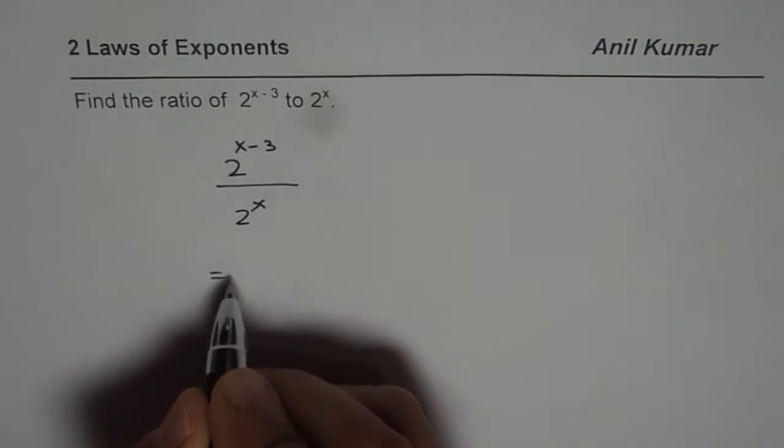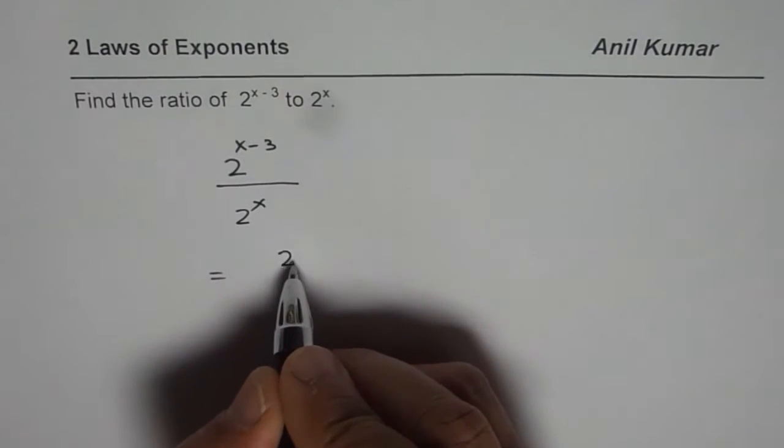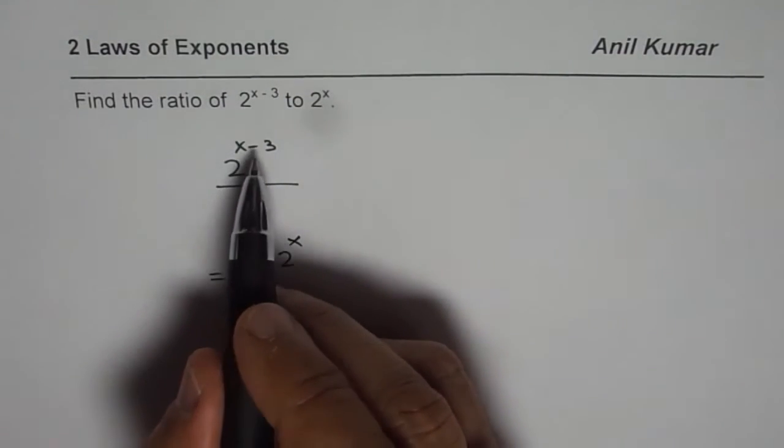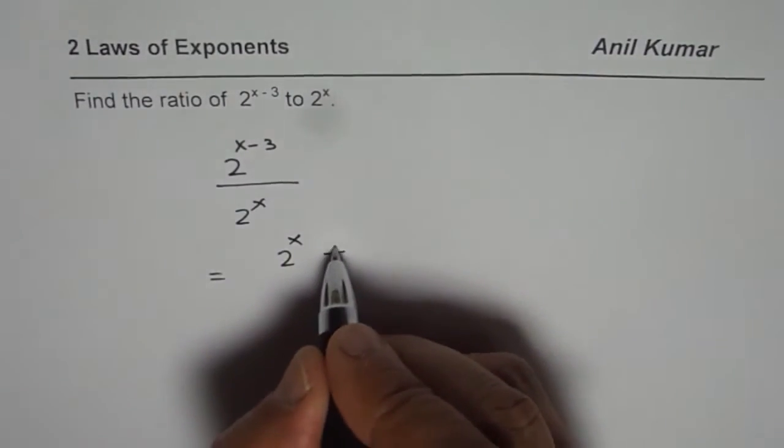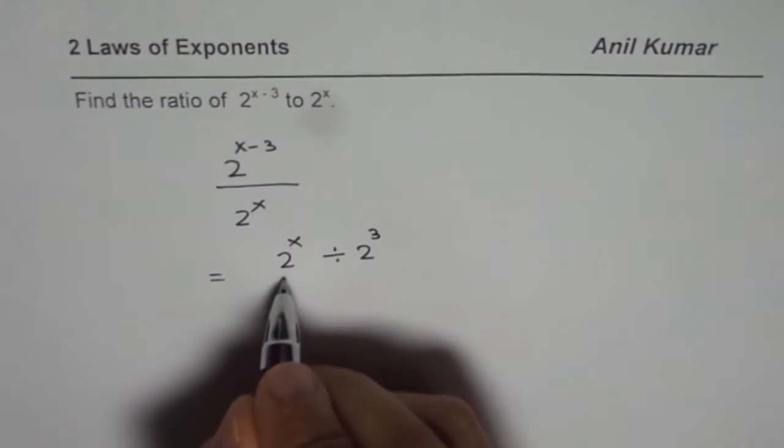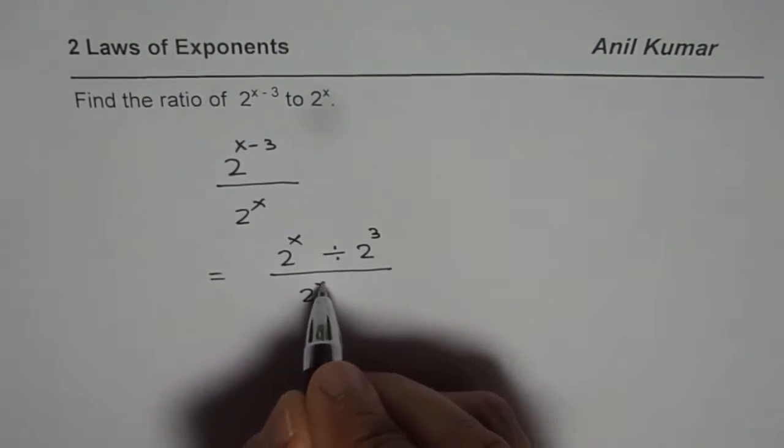Here is my solution. I could write this as the numerator could be written as 2 to the power of x. When I say minus it means divided by 2 to the power of 3. Is that okay? And here we have 2 to the power of x.